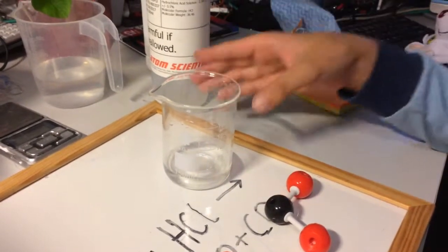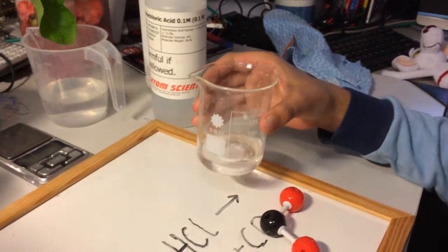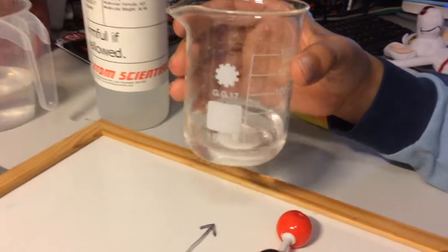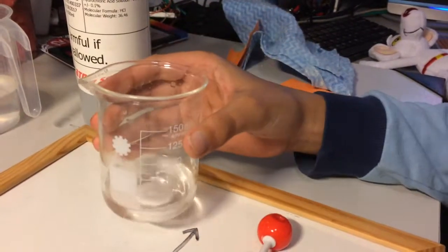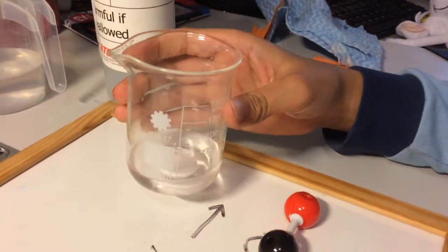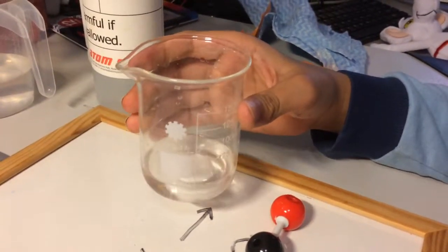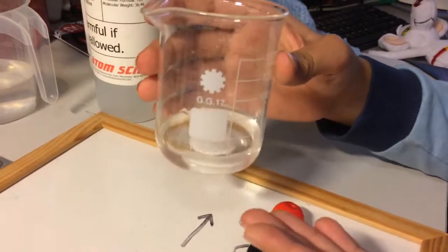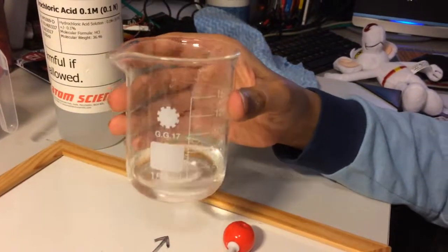In summary, when we mixed the sodium bicarbonate with the hydrochloric acid, it made ordinary salt water and carbon dioxide gas bubbles. Here this is just ordinary salt water, although I'm not going to drink it. Thanks for watching.